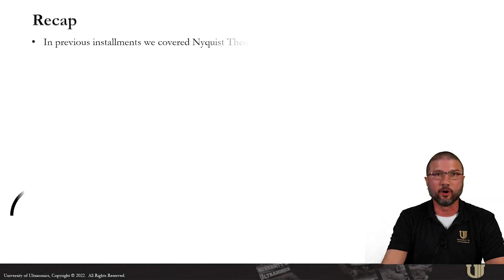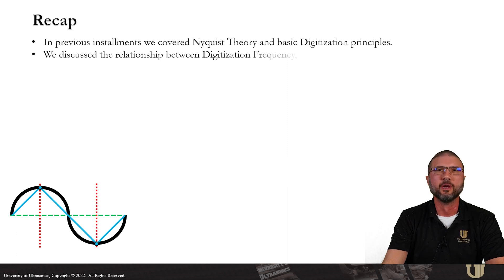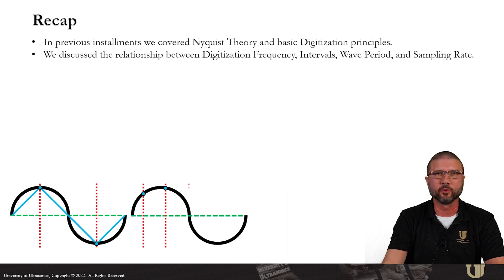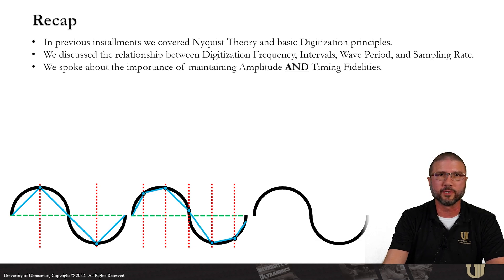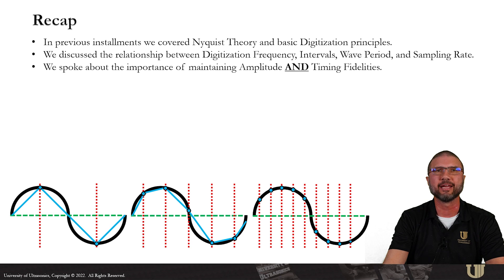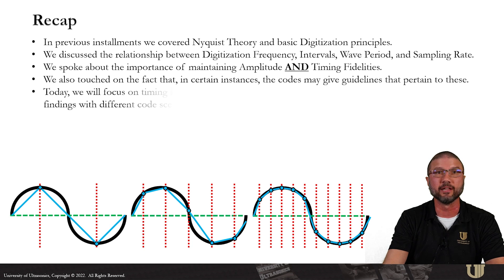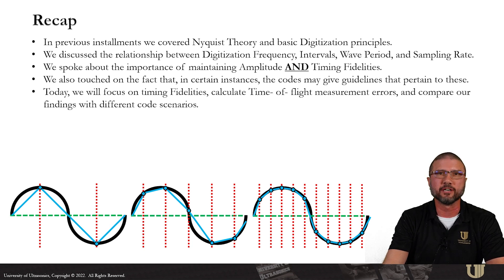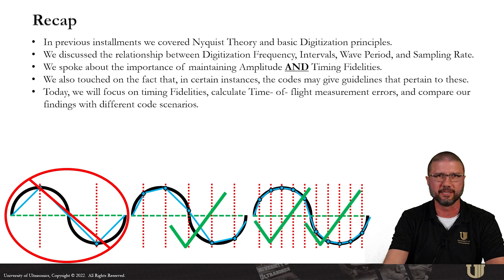In previous installments we covered Nyquist theory and basic digitization principles. We discussed the relationship between digitization frequency, intervals between samples, wave period, and sampling rate. We also spoke about the importance of maintaining both amplitude and timing fidelities, and even touched on the fact that in certain cases the codes may give guidelines that pertain to these. This time around we will focus on timing fidelity.